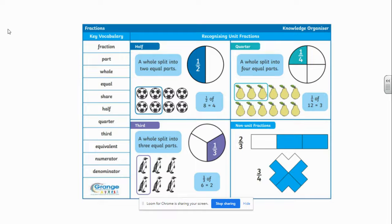I'm going to refer back to the knowledge organiser and look at this section here as we are looking to find a half. And we were looking at this yesterday because we were trying to recognise a half. What is a half? A whole split into two equal parts. Today we're going to be finding a half.